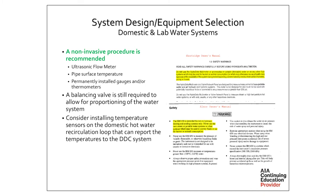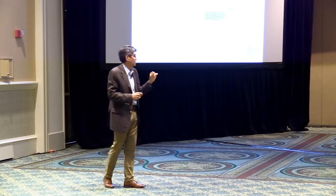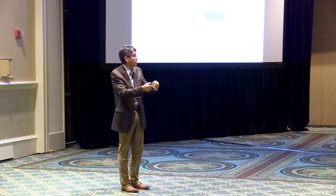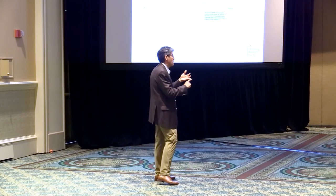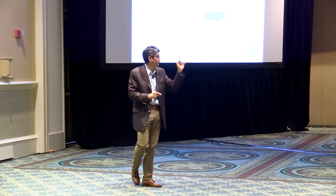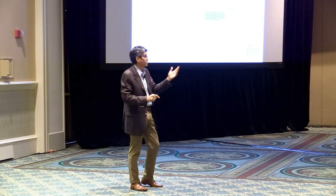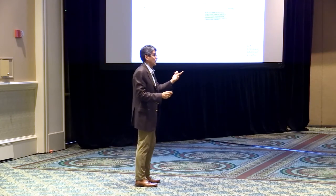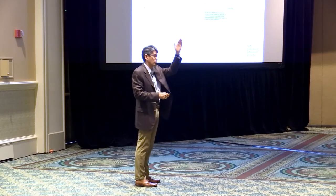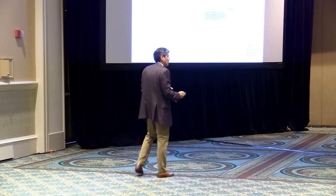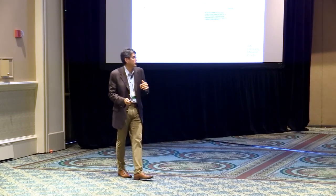For domestic water systems: TAB instrumentation per TAB manuals — Alnor, Short Ridge — is not rated for potable water use, so you don't want the TAB technician inserting instruments into potable water. Use non-invasive methods: ultrasonic flow meters, temperature sensors. For a large hot water recirculation system, put temperature sensors on DDC off each main branch to verify you're getting 120°F — the maintenance staff loves it because they can quickly confirm the system is working.